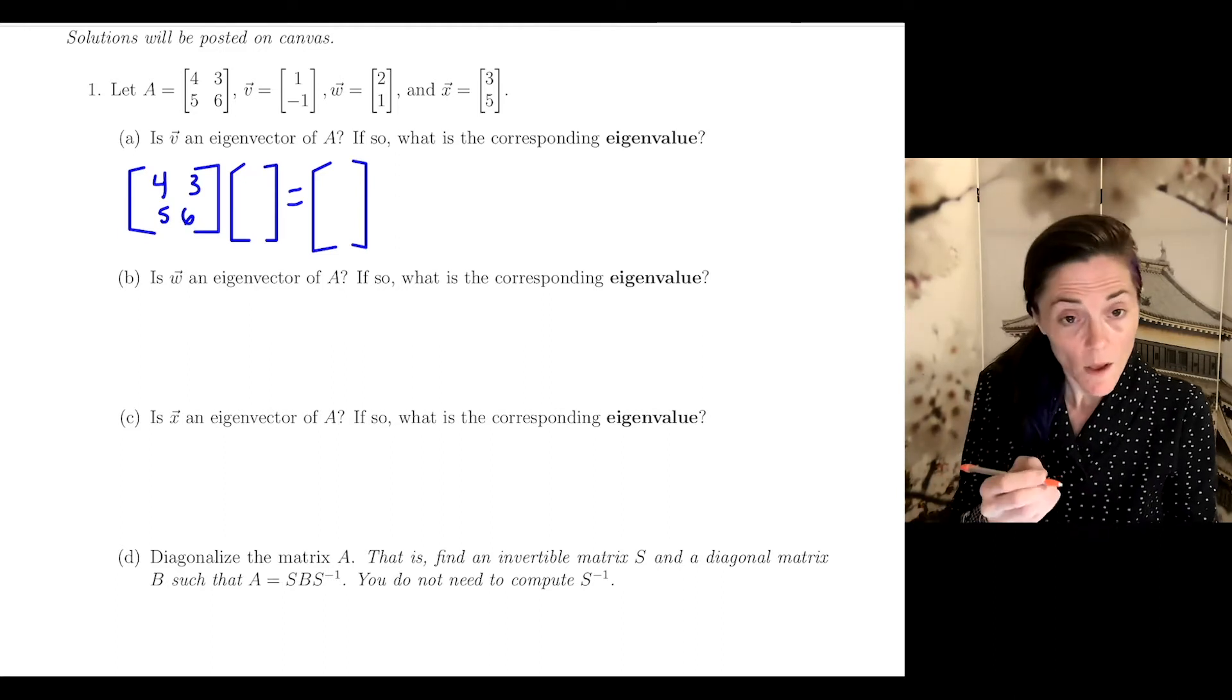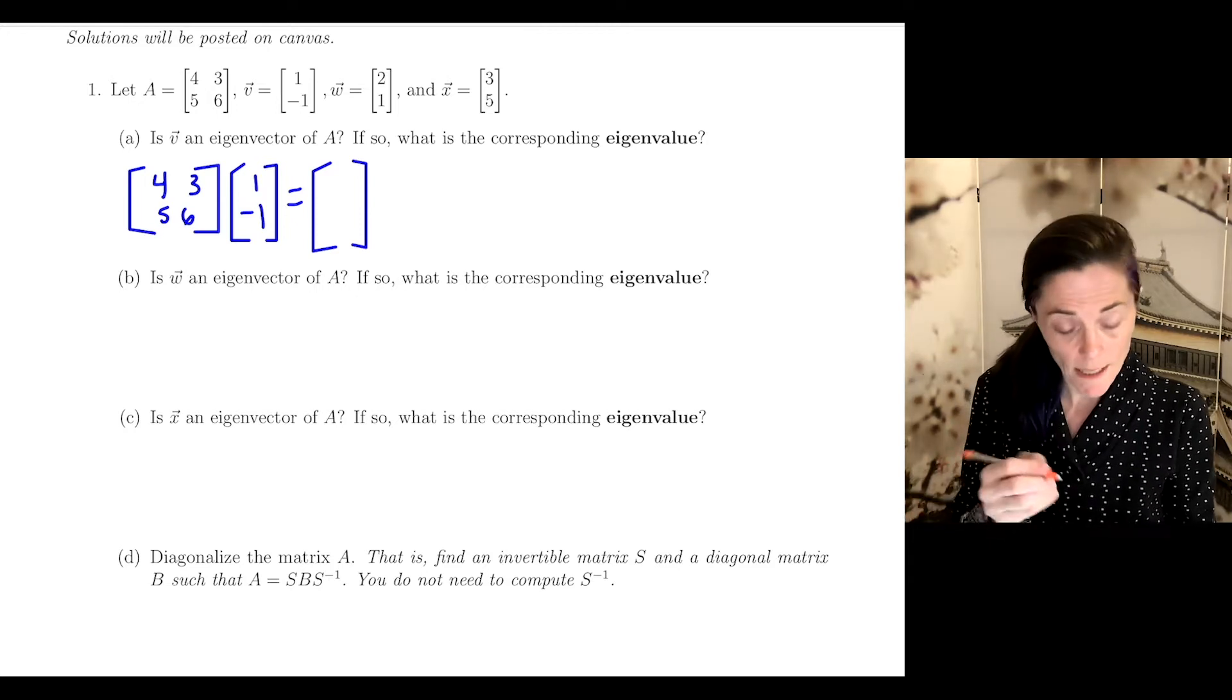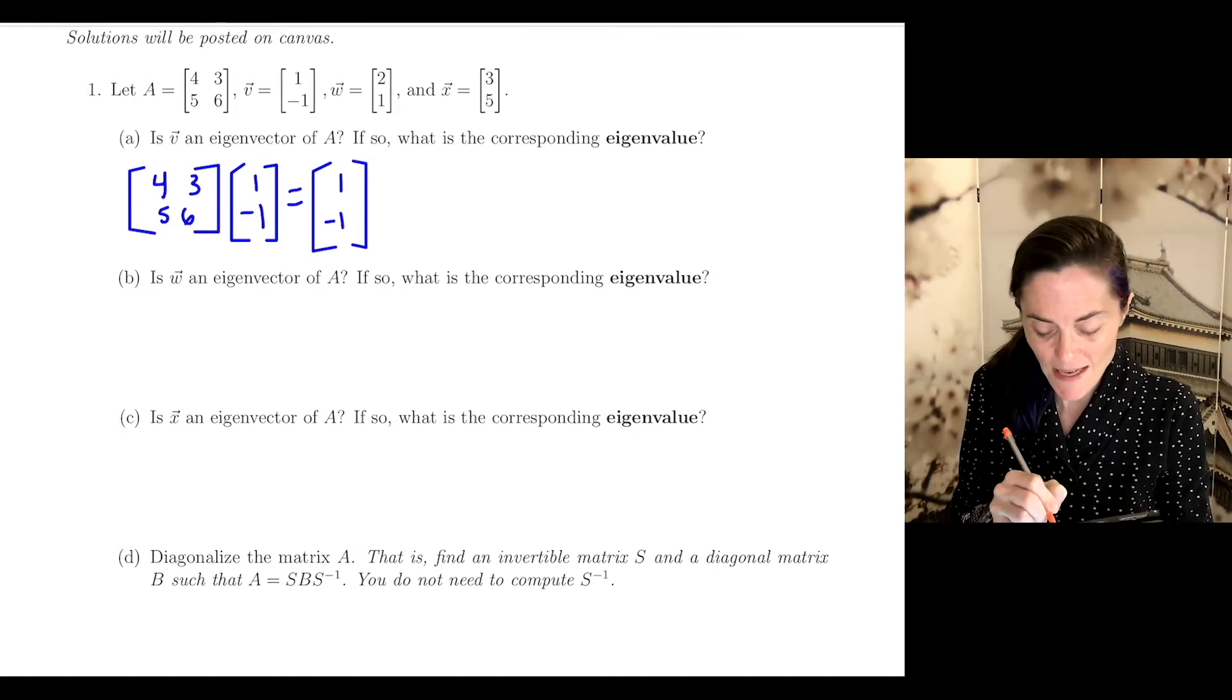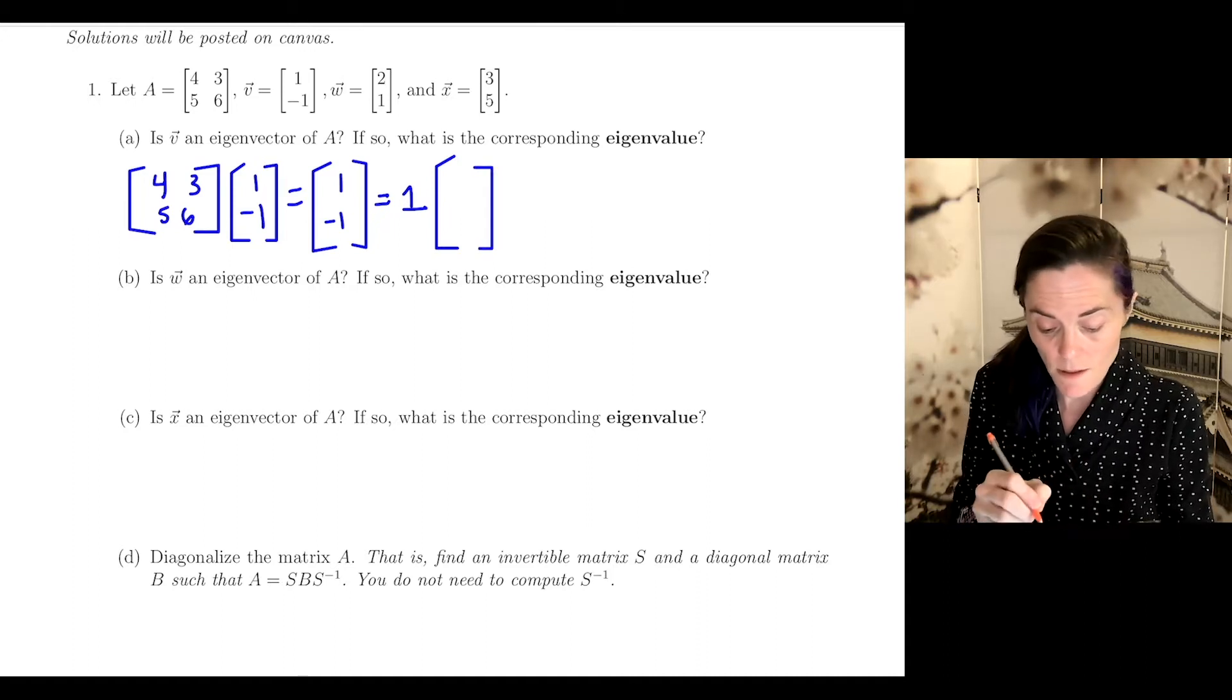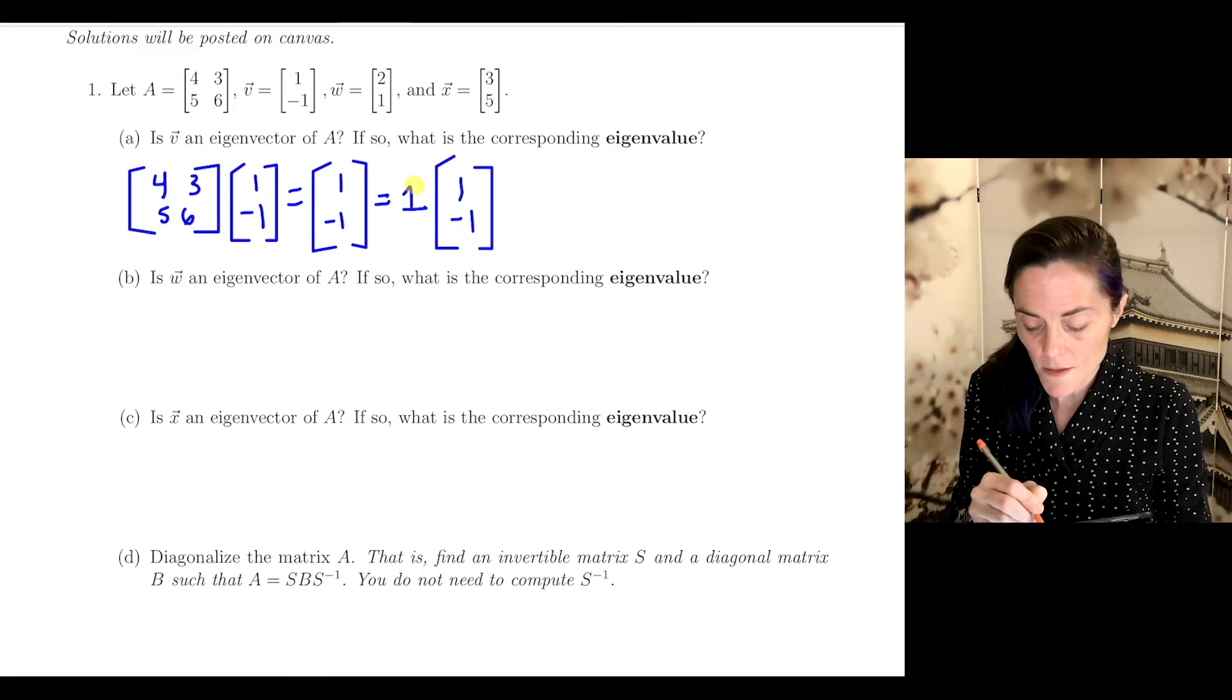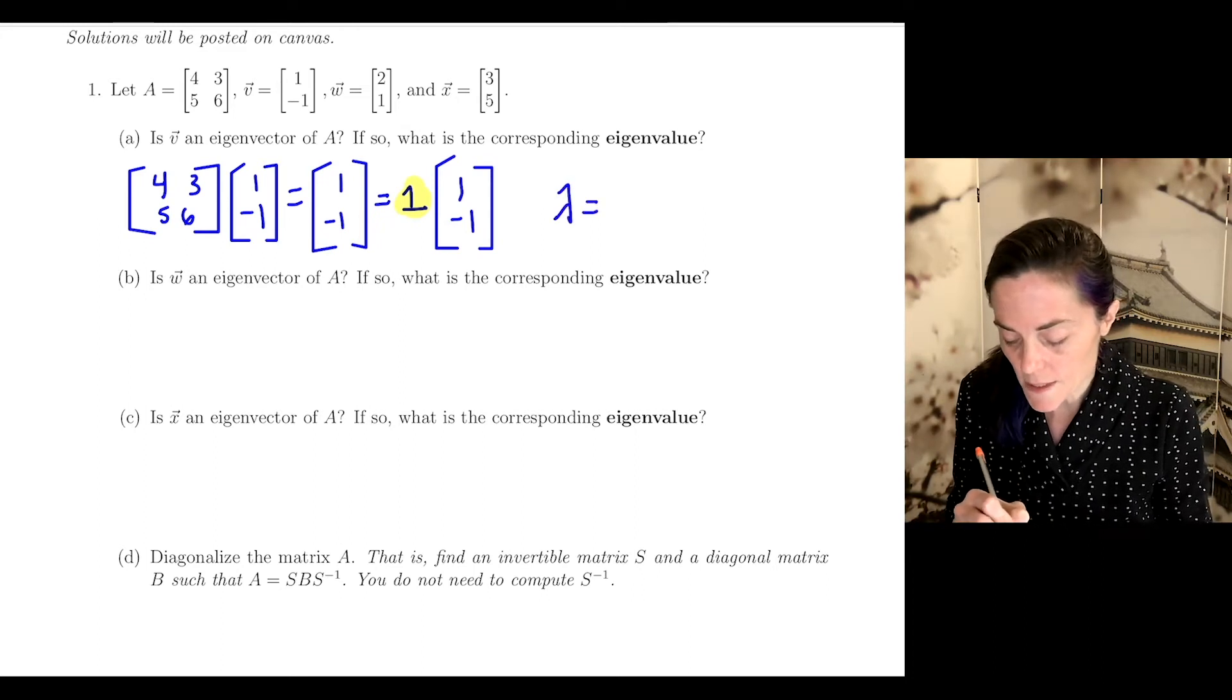In part A, we multiply A times (-1, 1). When we do, I get (4 - 3, 5 - 6), which is (1, -1). You notice this is 1 times this vector. So the first answer is: yes, V is an eigenvector for A because AV is a multiple of V, and the eigenvalue is lambda equals 1.